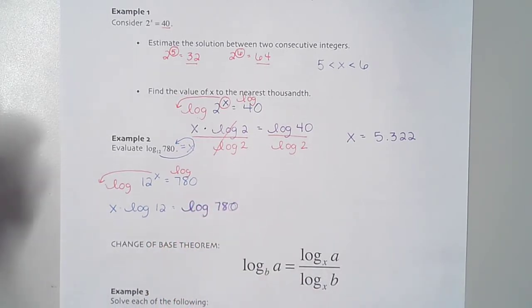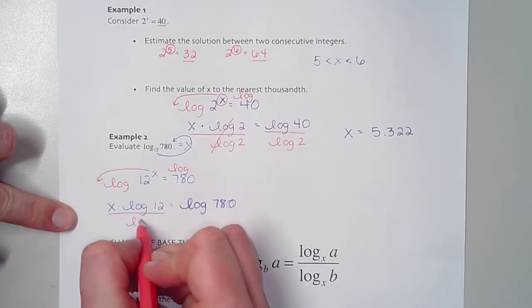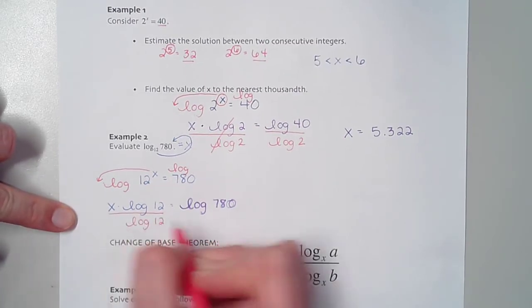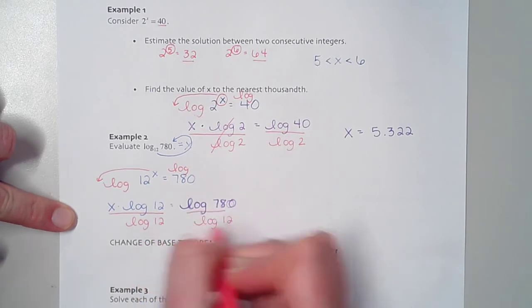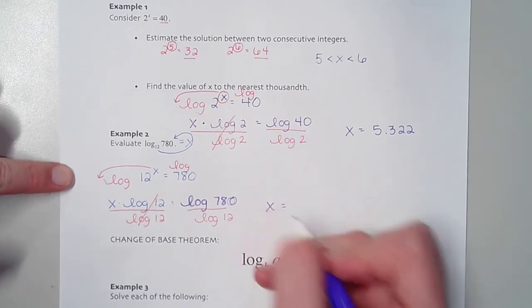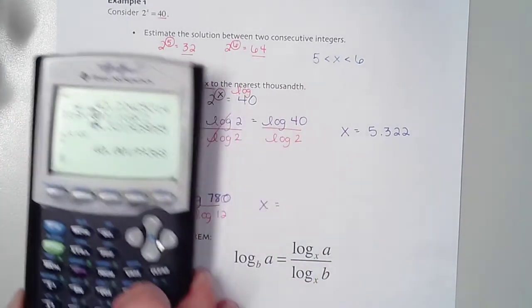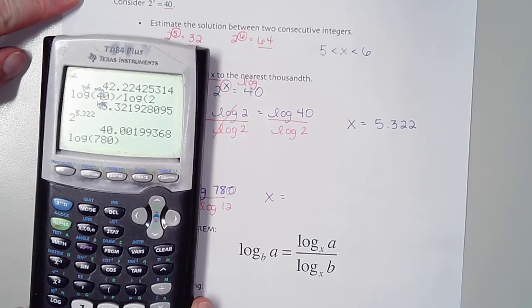I'm going to treat that exactly how I did above. I'm going to take a common log on each side. That allows me to bring this x down here. Now I have x times log 12 equals log 780. Then I'm going to divide by the log 12 to get the x by itself. We end up with x equals log 780 divided by log 12.